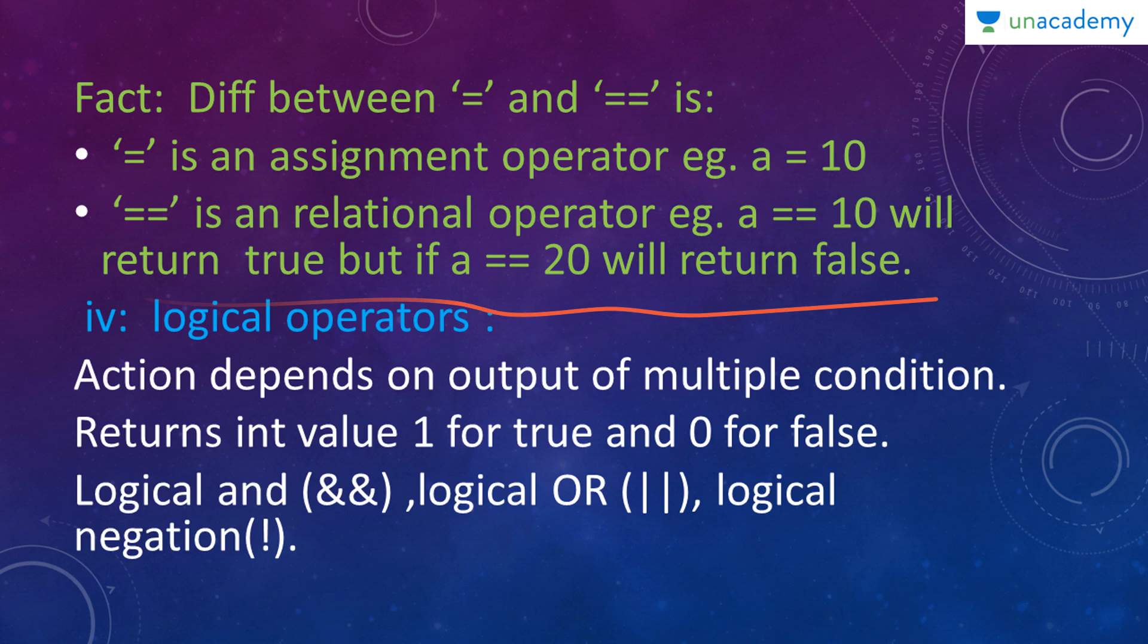Next type of operator is a logical operator. The action depends on output of multiple condition. Returns int value 1 for true and 0 for false. There are many logical operators. One is logical AND which is 2 ampersand symbol and then logical OR and then you have logical negation which is also a logical NOT.